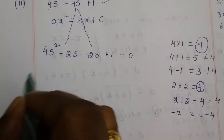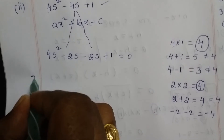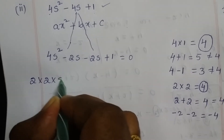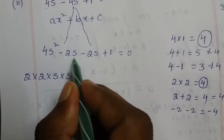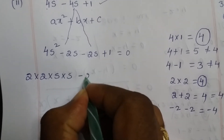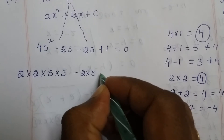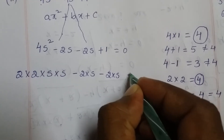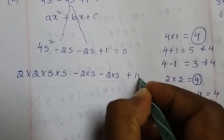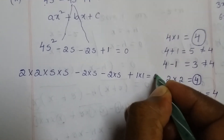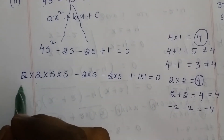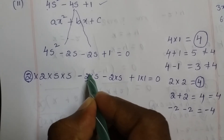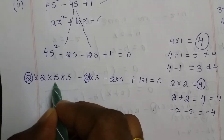Now look for common terms. 4s² can be written as 2×2×s, and the second term is minus 2s which is 2×s. The third term minus 2s is also 2×s, and 1 can be written as 1×1. In the first two terms, 2 is common and s is also common in both.